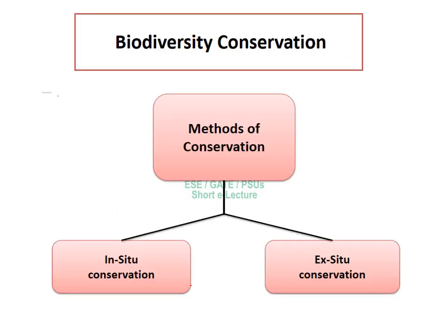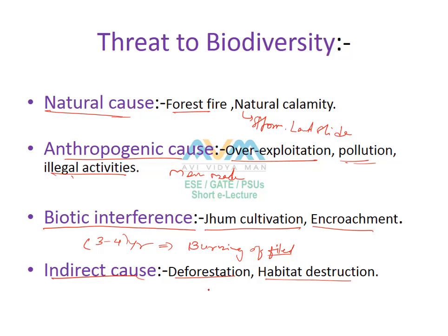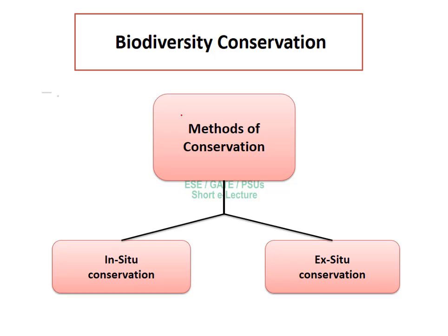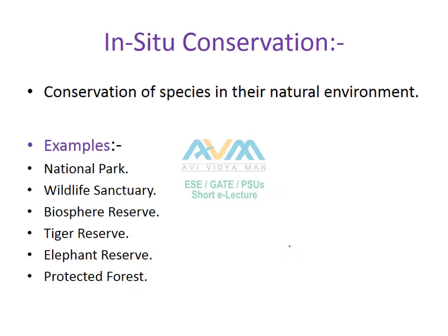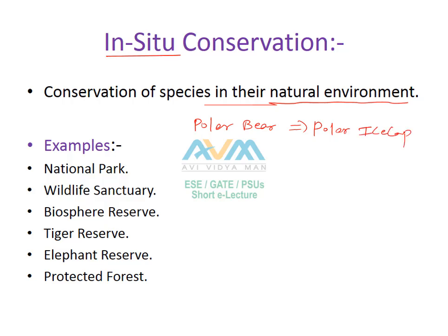Because of all these threats to biodiversity, it is necessary to make a conservation effort. The methods of conservation of biodiversity are: first, in-situ conservation, and second, ex-situ conservation. In-situ conservation refers to the conservation of species in their own natural environment. For example, conserving polar bears in their natural environment — the polar region — is an in-situ conservation practice.